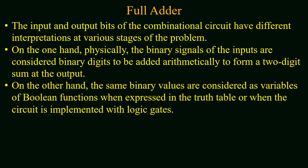The input and output bits of the combinational circuit may have different interpretations at various stages. Physically, the binary signals of the input are considered as binary digits to be added arithmetically to form a two-digit sum at the output. On the other hand, the same binary values are considered as variables of a boolean function when expressed in the truth table or when the circuit is implemented with logic gates.